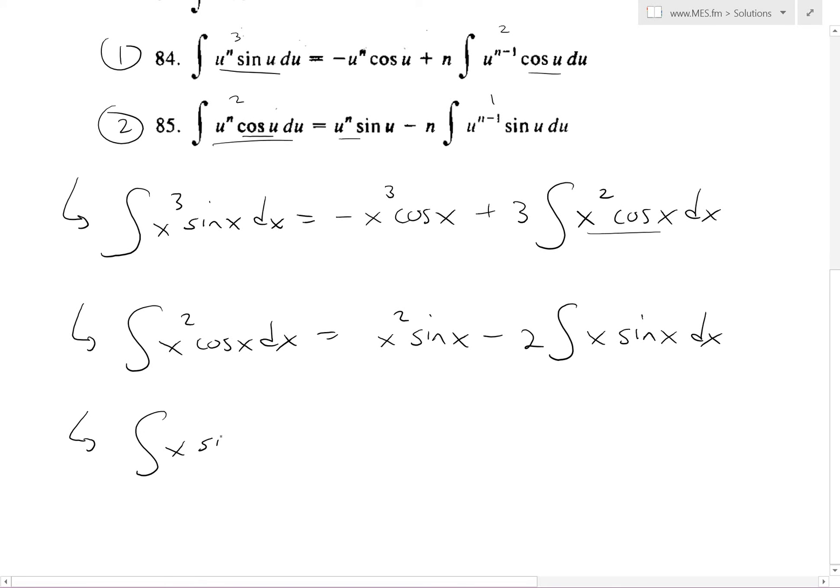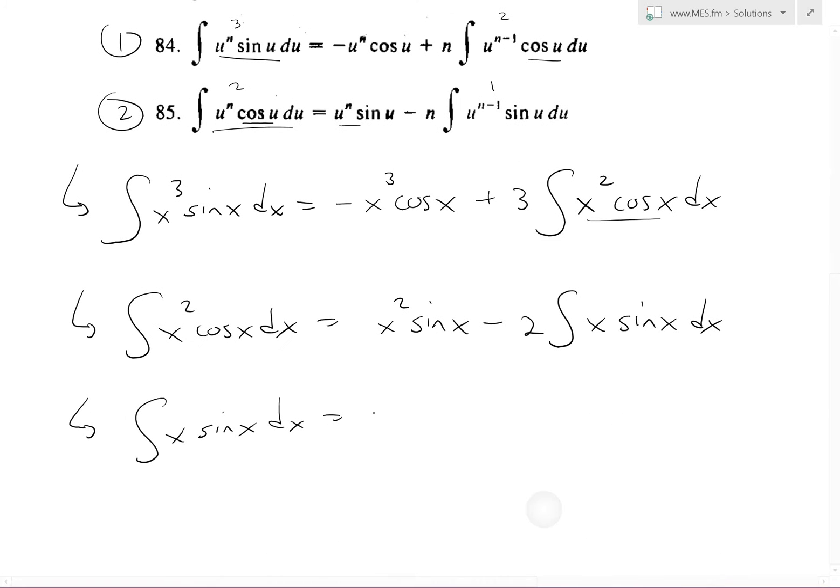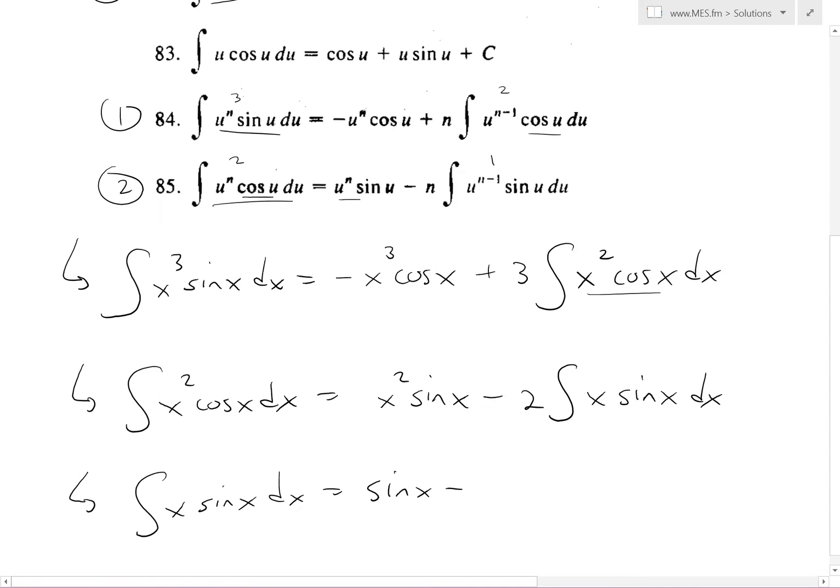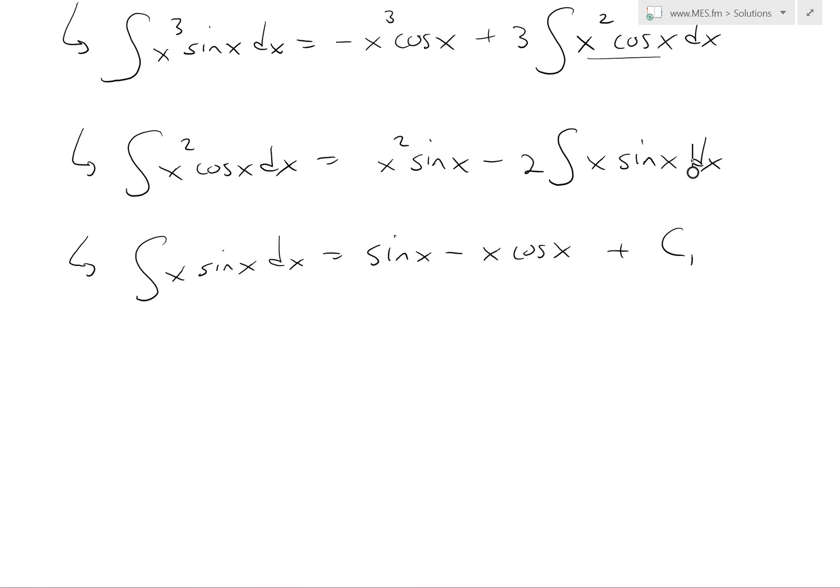Because that's u sin(u) or x sin(x). So this part right here, integral of x sin(x) dx, this equals simply sin(x) - x cos(x) plus a constant. In this case we'll call it constant 1, C₁, because later we'll have it multiplied all out.